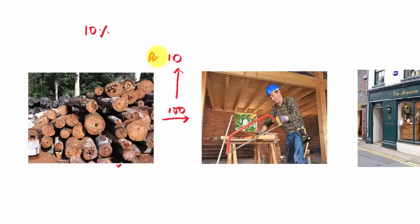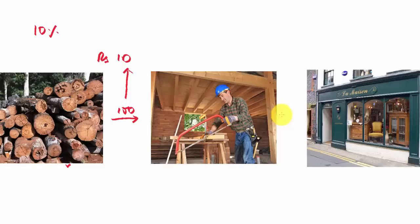Now this carpenter makes a furniture out of that log and sells to the furniture company in rupees 200. Now at the rate of 10 percent, tax will be rupees 20. This carpenter will give 20 rupees tax to the government.